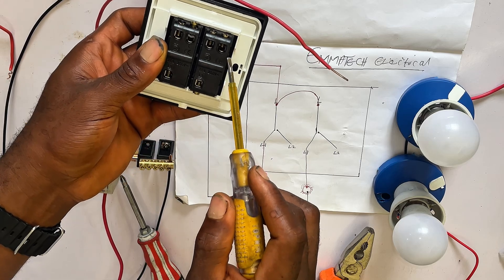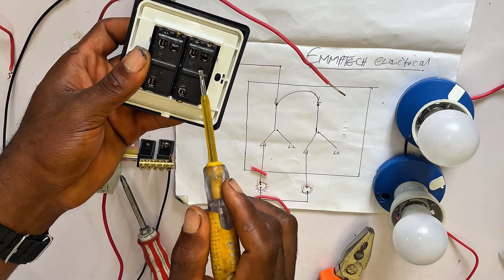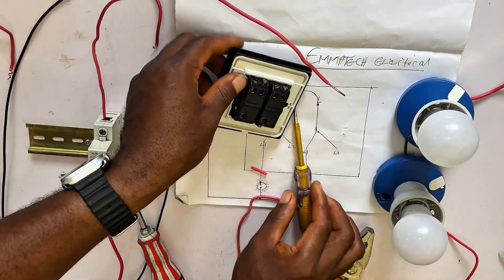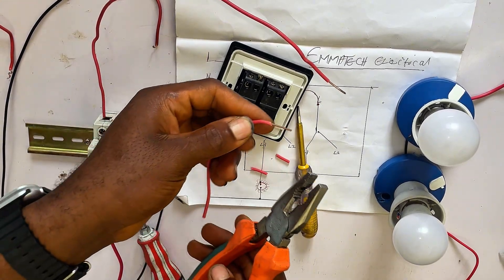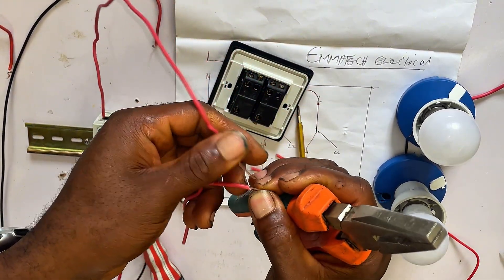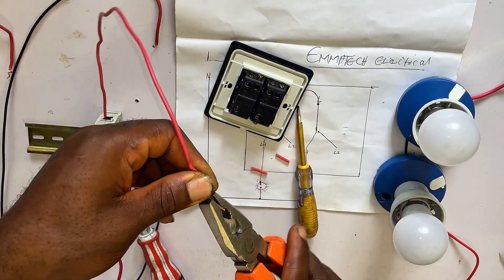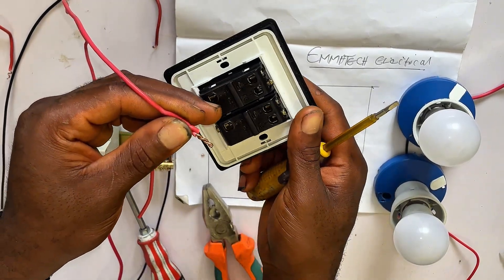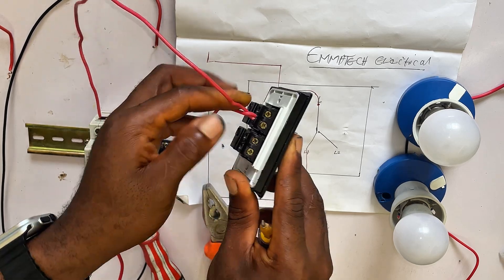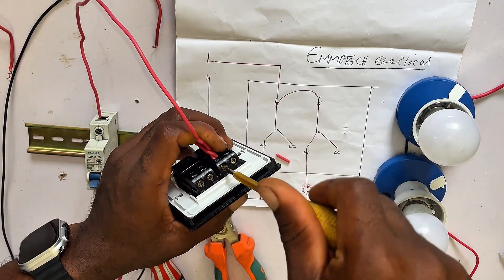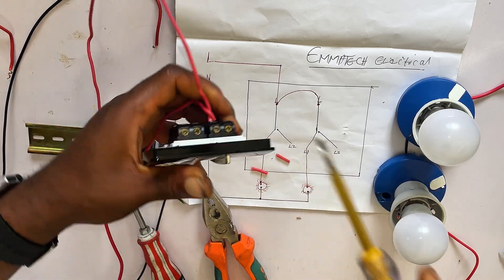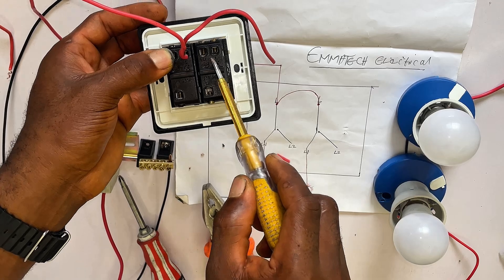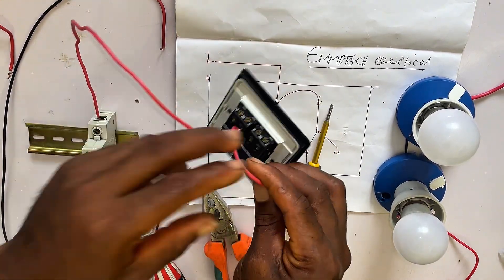Here you can see the L common terminal, then L1 and L2 for each gang. I'm going to connect this wire to the first L terminal, then loop from that L to the second L. Before I connect it I'll join the wires so one goes to the second L. You can see L here — we put it in this way and tighten it. Then this second wire loops to the second L terminal.